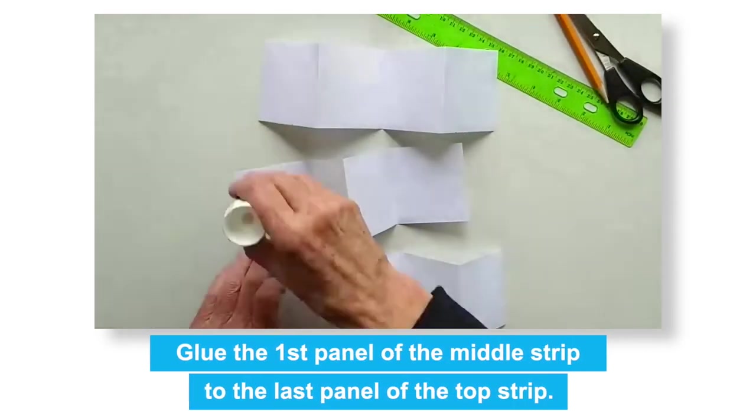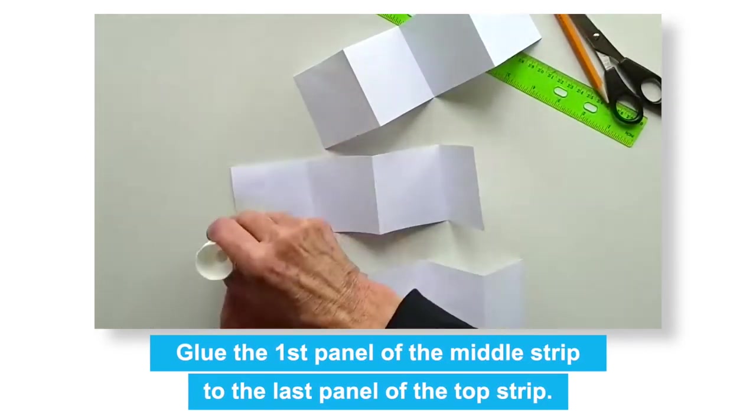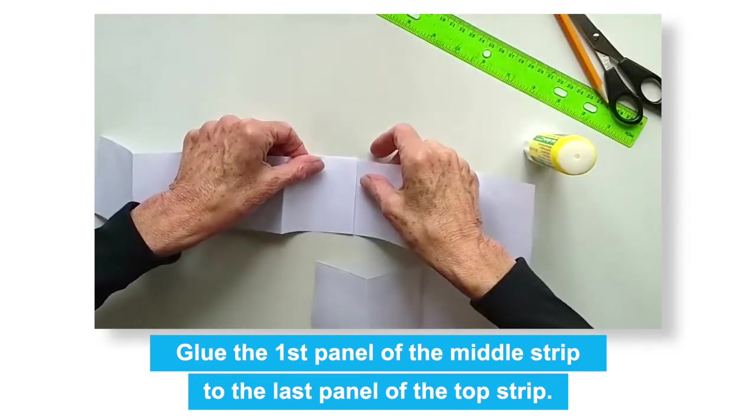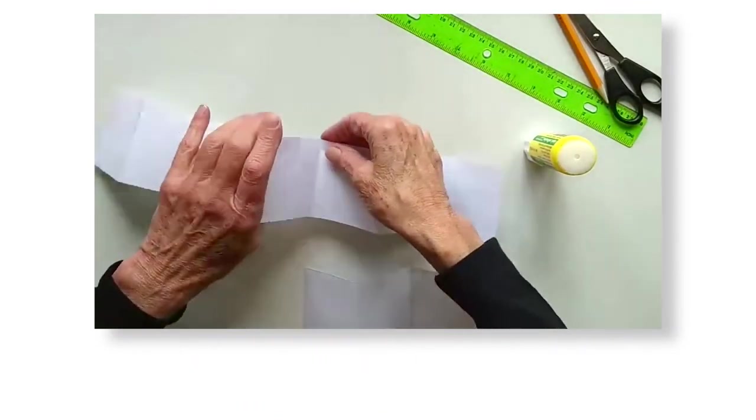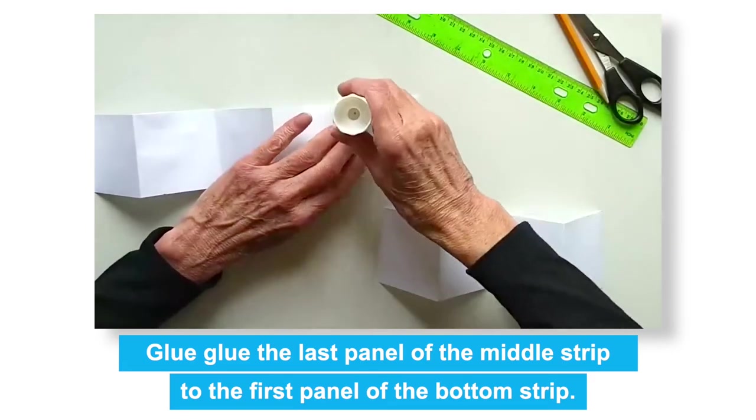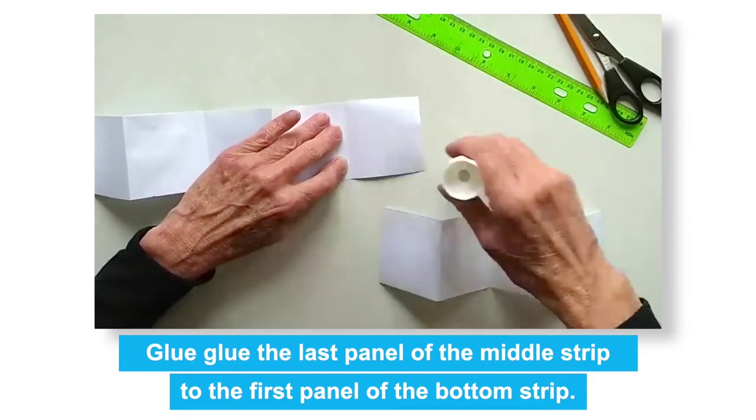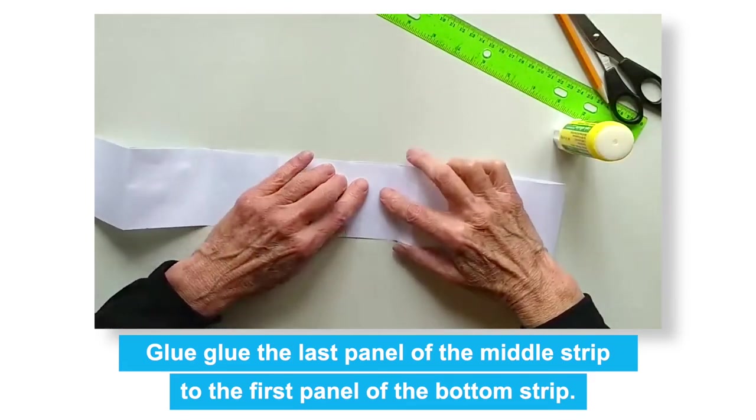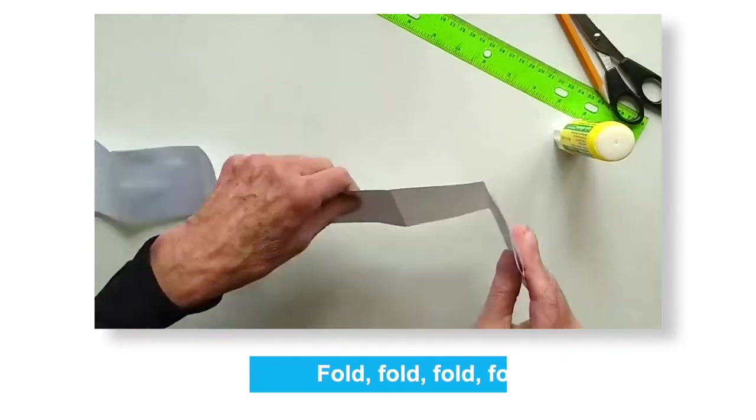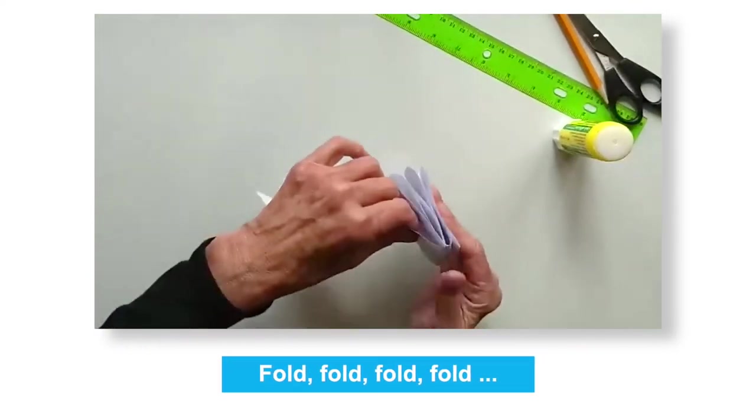Use the glue stick to glue the first panel of the middle strip to the last panel of the top strip. Now glue the last panel of the middle strip to the first panel of the bottom strip. This will create a ten panel accordion.